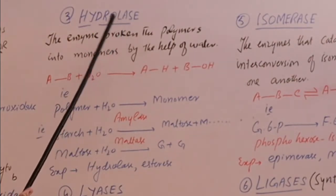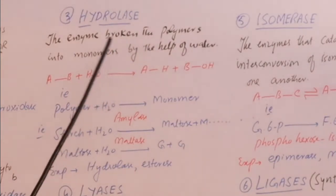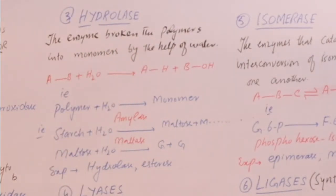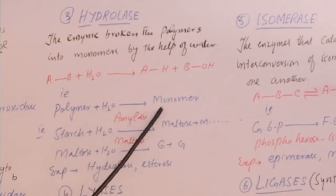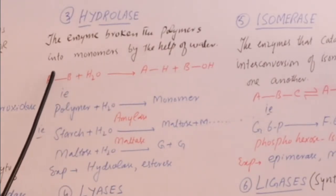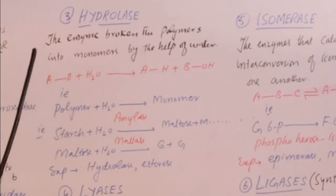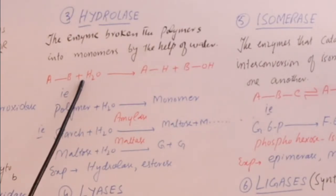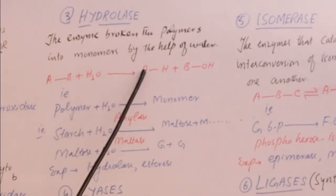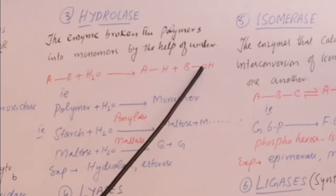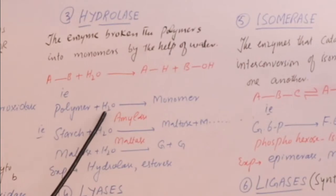The third group is hydrolases. 'Hydro' means water and 'lase' means breaking. These enzymes break a polymer into monomers with the help of water. A water molecule splits into H⁺ and OH⁻ ions; H⁺ joins one fragment (A) and OH⁻ joins another fragment (B), producing two different molecules.